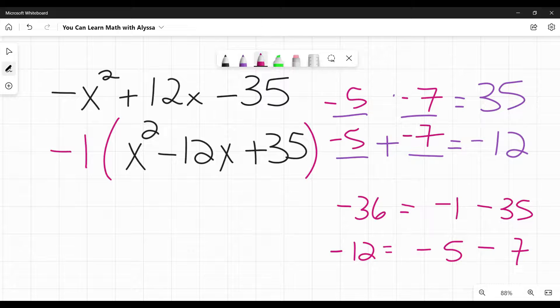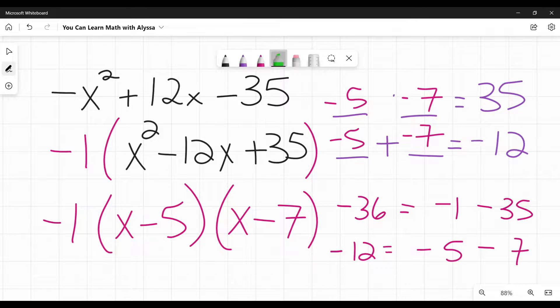Now that I have my two terms there, I can write my final answer. It is negative 1 times x minus 5 times x minus 7.